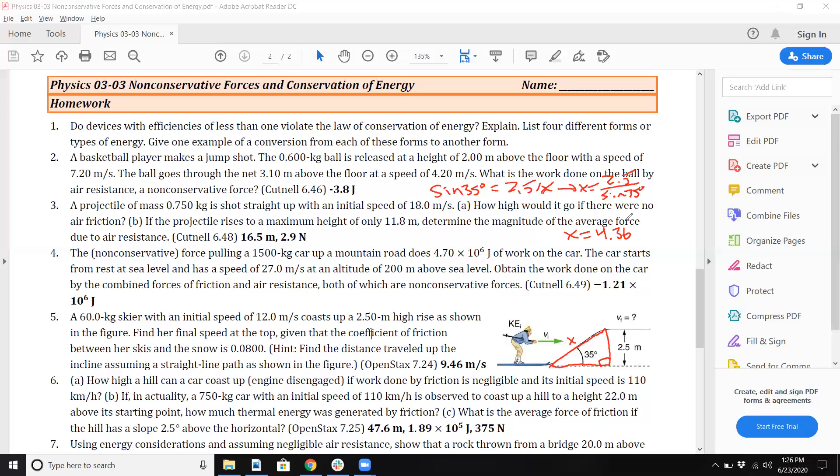Anyway, so now remember initial kinetic energy plus initial potential energy plus your non-conservative work equals final kinetic energy plus final potential. Initially we have 12 meters per second, so we're going to do one half times m times 12 squared. The potential energy is zero.